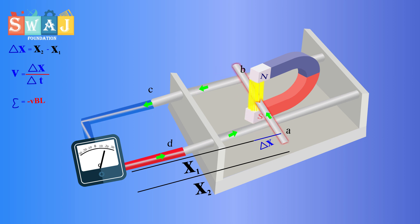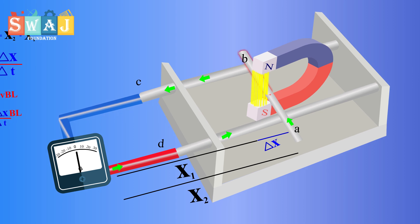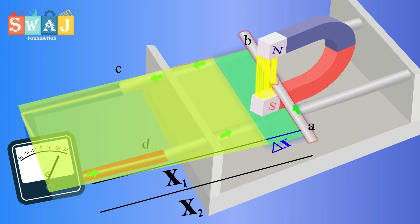After putting the value of v, e equals minus del x over del t into BL. As the rod moves through the distance del x, the increase in the area of the loop del A equals del x into L.